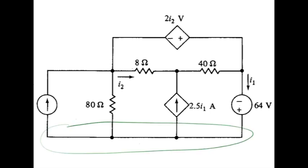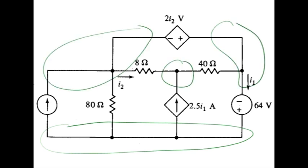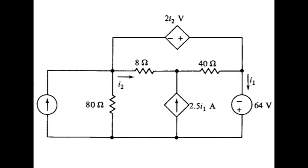Let's try counting up the nodes here real quick. We have one, two, three, four nodes total, so that means we would need to write at most three equations and three unknowns. However, we have voltage sources in here, and each voltage source is supposed to reduce the number of equations that we need to write.